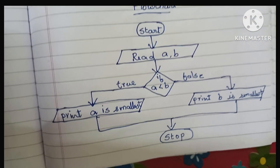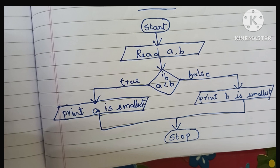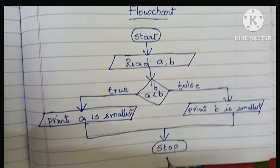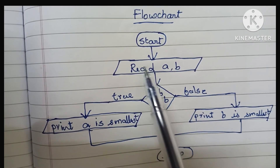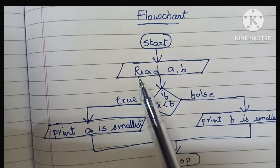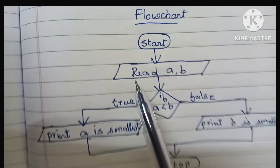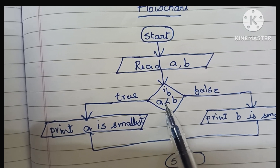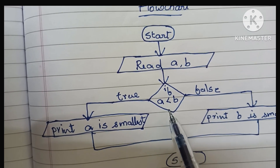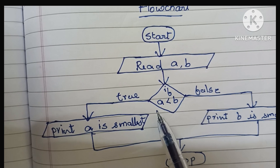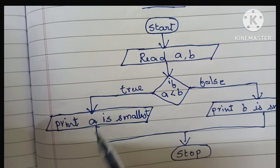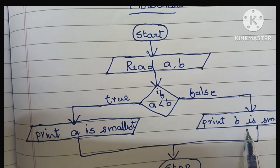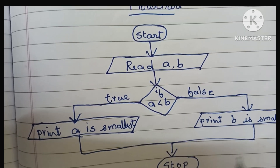So guys, this is the flowchart to find the smallest between two numbers. It starts with the start statement in an oval shape. Next, we read input values written within a parallelogram — variables a and b. Then we compare two variables: if a is less than b, done in a diamond shape. If true, print 'a is smallest'; else print 'b is smallest'.